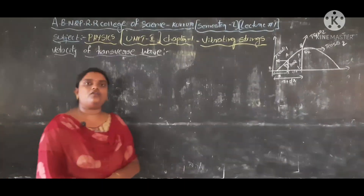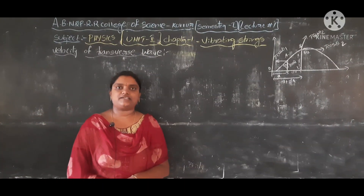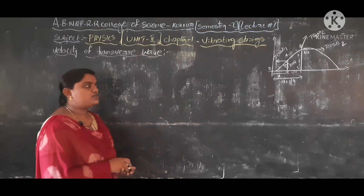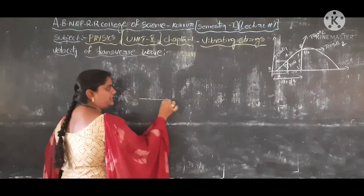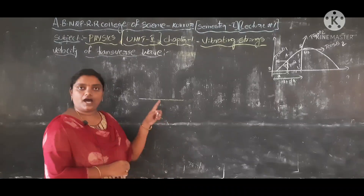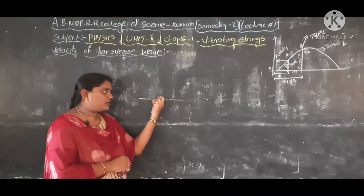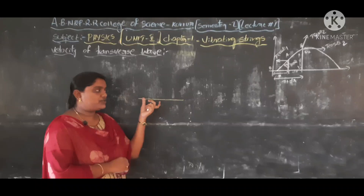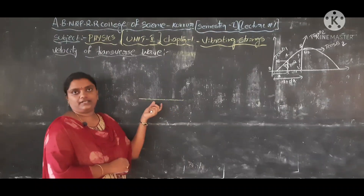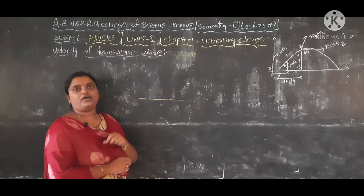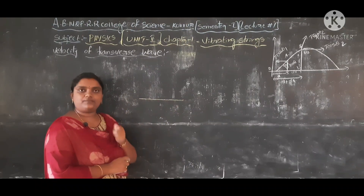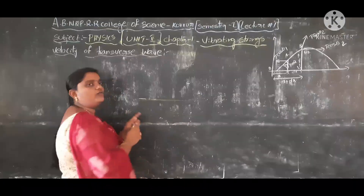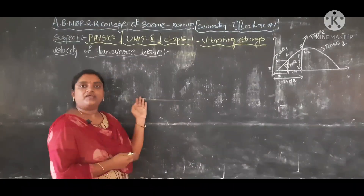First of all, we know what is meant by a string. A string is one where, as compared to its diameter, the length is very large. The properties of a string are: it should be elastic, it should have flexibility, and throughout the string it should be uniform.